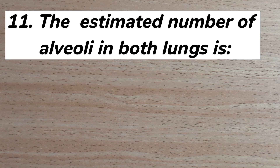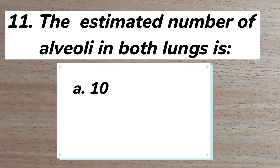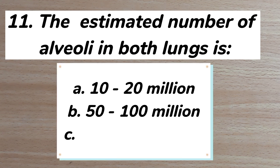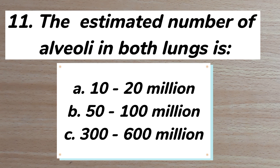Number eleven: the estimated number of alveoli in both lungs is A) 10 to 20 million, B) 50 to 100 million, C) 300 to 600 million. The correct answer is C: 300 to 600 million.